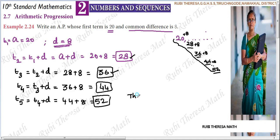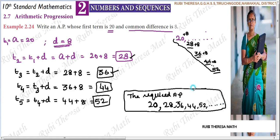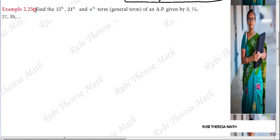So the required AP that they have asked for: first term is 20, common difference is 8. The AP sequence is 20, 28, 36, 44, 52 and so on - it is an infinite sequence. Next example 2.25.